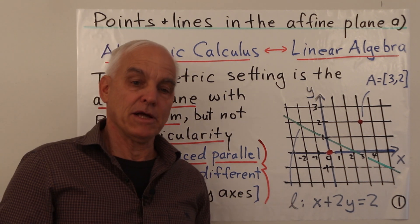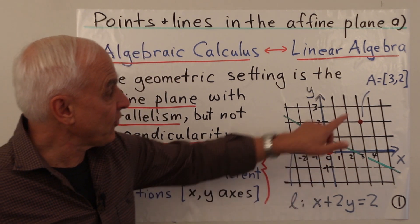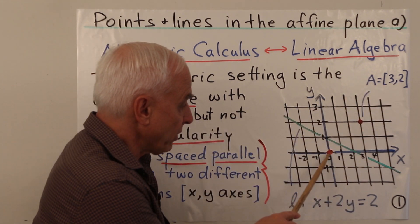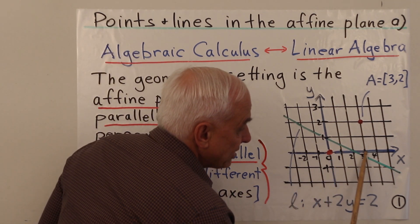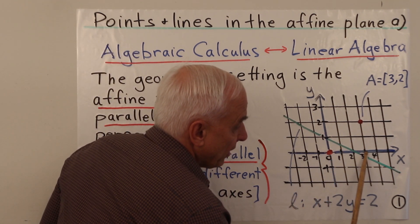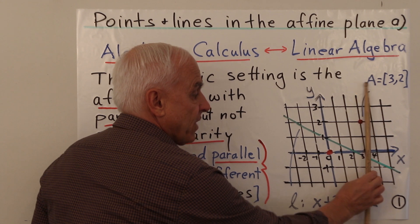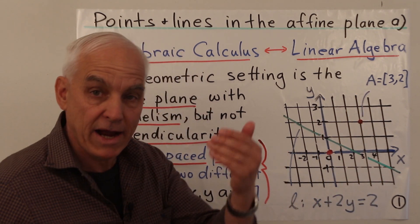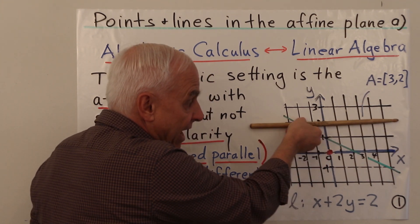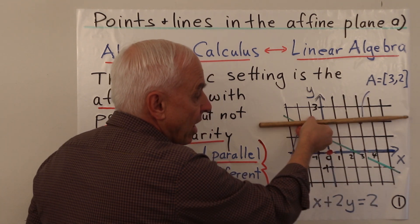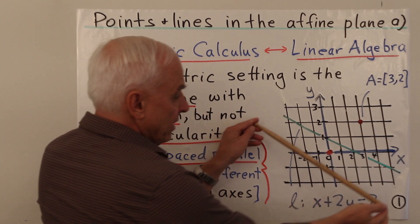Suppose we have such a kind of affine grid; then we can talk about points and lines, which are at least the first fundamental objects of study. A point for us will be something like A = [3, 2], representing the point which is 3 in the x direction and 2 in the y direction. We go to x position 3, draw a line parallel to the y-axis, then go to y position 2 and draw a line parallel to the x-axis — it's the intersection of these two lines that determines point A.